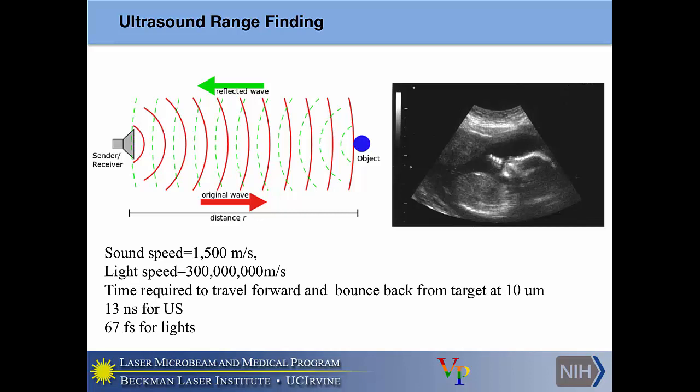In OCT this is exactly the same thing, except we rely on light scattering. However, the one big difference is that the speed of sound in tissue is about 1,500 meters per second, whereas the speed of light in tissue is about 300 million meters per second. The time to differentiate between scatterers about 10 micrometers apart — roughly the standard OCT resolution — would be 13 nanoseconds for ultrasound, but 67 femtoseconds for OCT. Currently there are no detectors capable of resolving such high time resolutions, so directly measuring these light echoes is impossible.